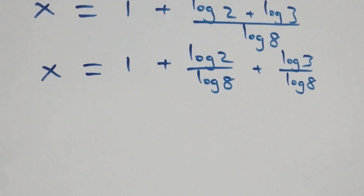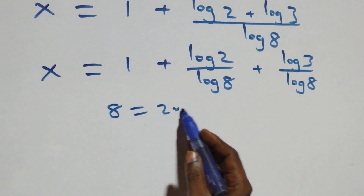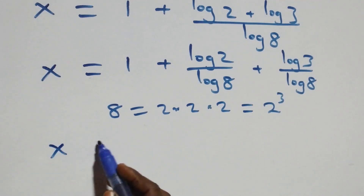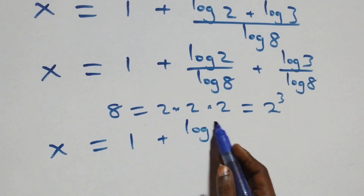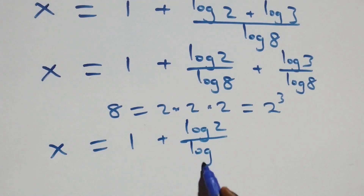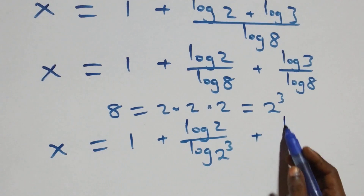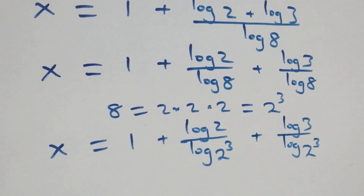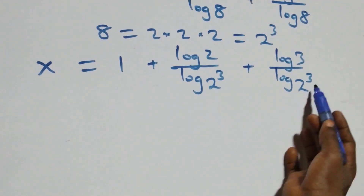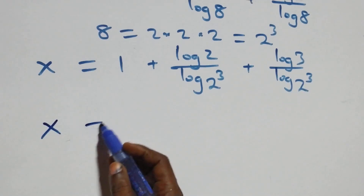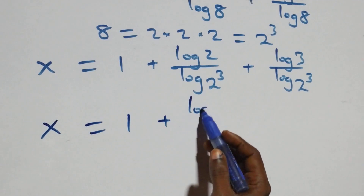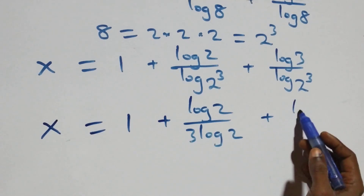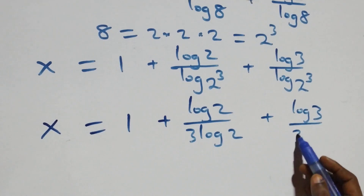From here we can also rewrite 8 as 2 × 2 × 2, which is the same as 2 cubed. So we have x = 1 + log 2 over log(2³) + log 3 over log(2³). We apply the power rule of log — the 3 comes out front — and this becomes x = 1 + log 2 over (3·log 2) + log 3 over (3·log 2).